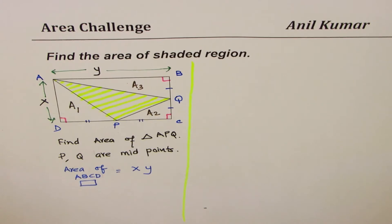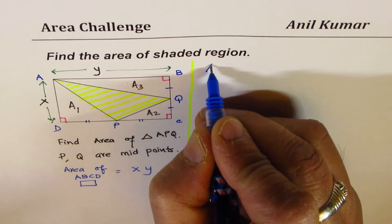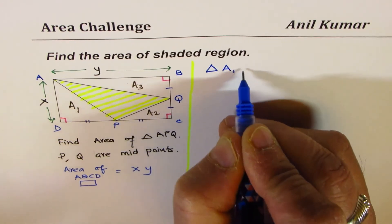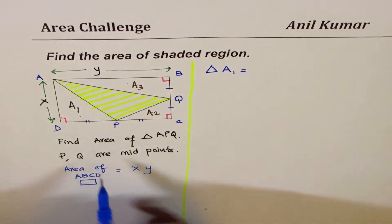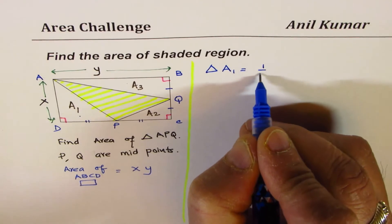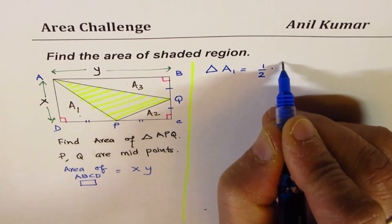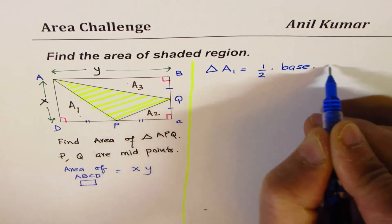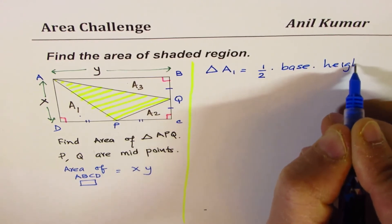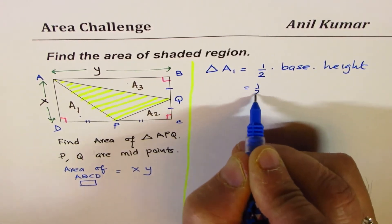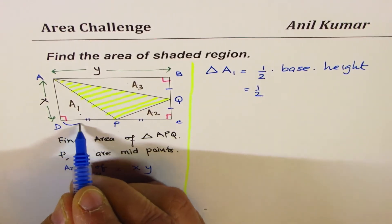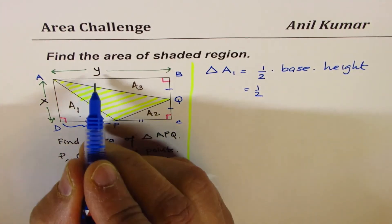So let's consider them one by one. What is the area of triangle A1? This triangle—area of the triangle formula is half base times height. So in this case, it's half, and what is base? How much is this? This is half of Y.